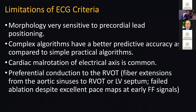One of the limitations is the morphology is very sensitive to the precordial leads. You get an EKG in clinic and lead V1 and V2 may not be placed in the exact same spot as when the patient gets into the EP lab. Even just one interspace below or higher for V1 and V2 will really throw off your morphology.